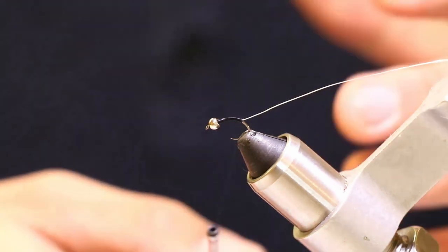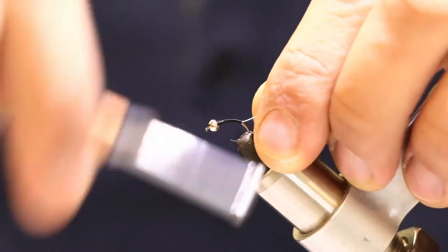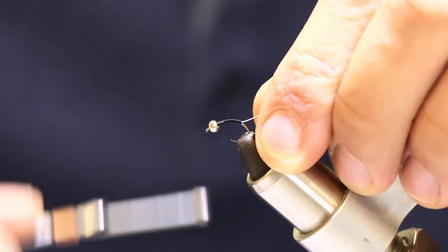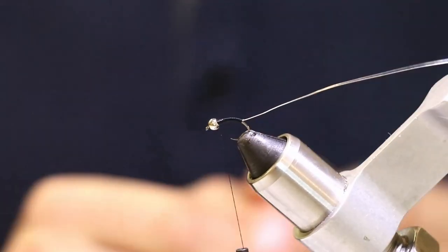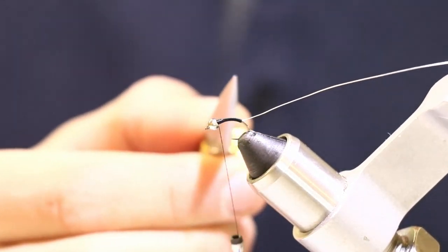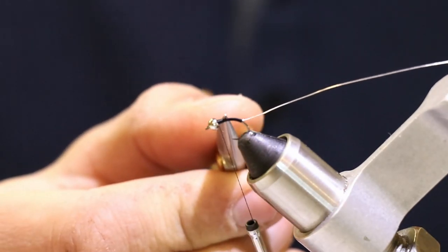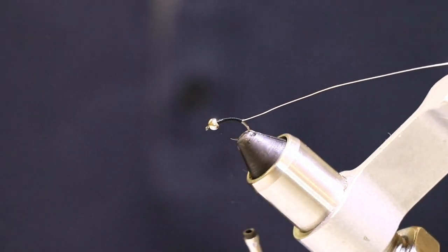So the next step really simple. I'm going to wrap my thread all the way back, still creating the body, and tie it all the way to the point of the bead right here, just right behind the bead again. Alright.